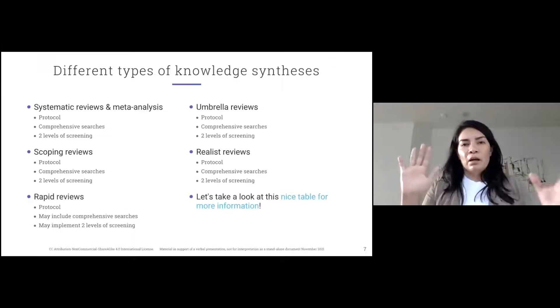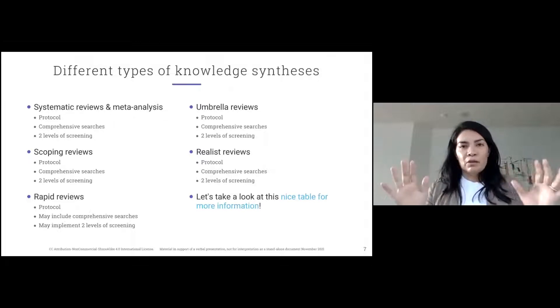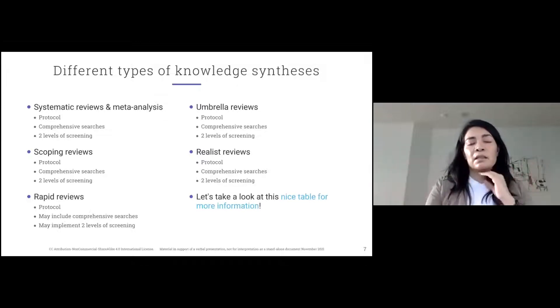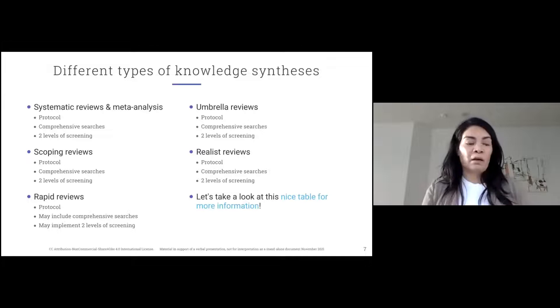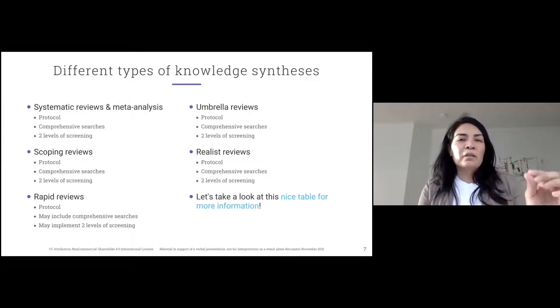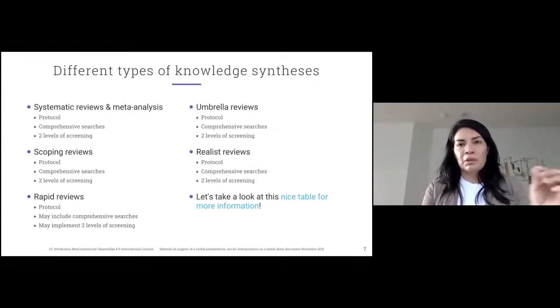The most common steps in the process typically include a protocol, which is non-negotiable, the comprehensive searching and the two levels of screening. And here you can start to see where some of these steps may vary depending on a knowledge synthesis type that you're completing. For example, in rapid reviews, they may or may not include comprehensive searches, and they may or may not implement two levels of screening.